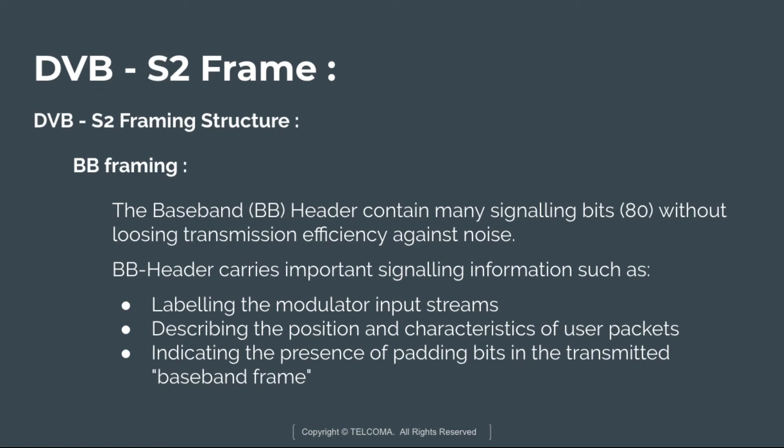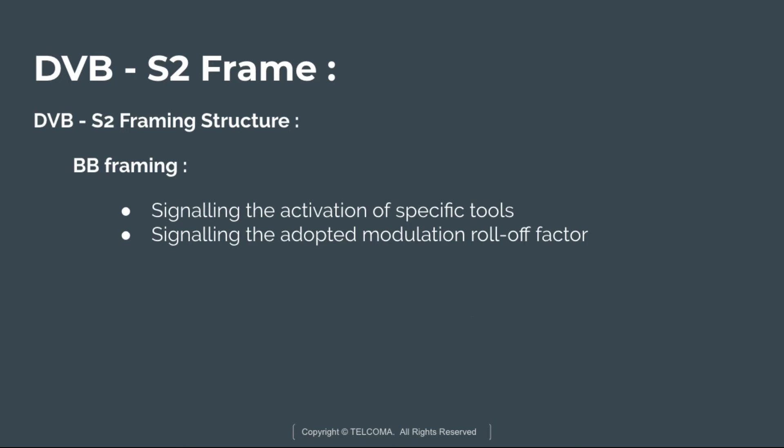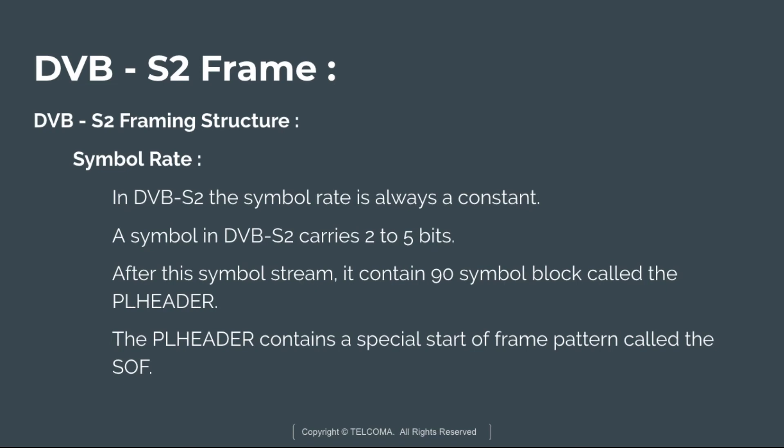The baseband header carries many signaling bits without losing transmission efficiency against noise. The BB header carries signaling information such as labeling the modulator input stream, describing the position and characteristics of the user packet, indicating the presence of padding bits in the transmitted baseband frame, and possibly containing information about signaling the activation of specific tools or signaling the adaptive modulation roll-off factor.